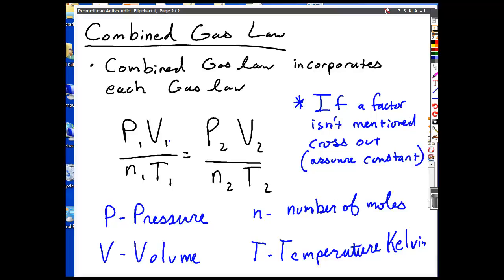So, the combined gas law incorporates each gas law. P1 V1 over N1 T1 is equal to P2 V2 over N2 T2, where P is pressure, V is volume, N is number of moles, and T is temperature in Kelvin.